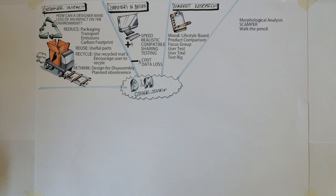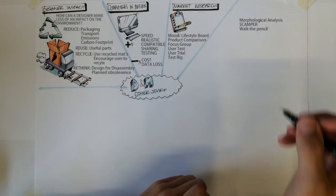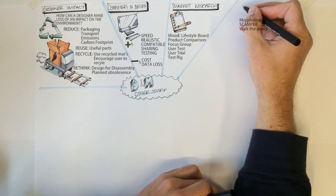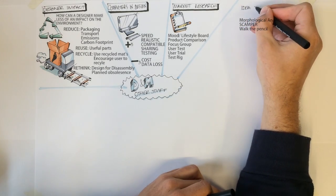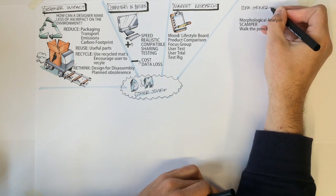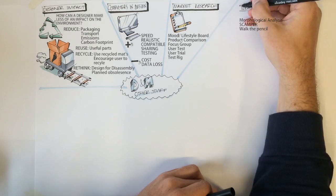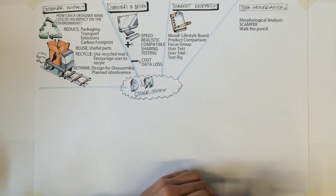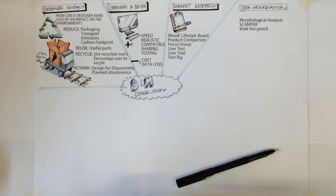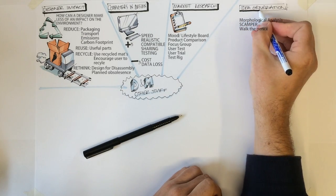Idea generation. A designer always wants to produce unique designs. Idea generation techniques are used to design creative ideas which haven't been seen before. There are many types and we will look at three. One important thing to remember is that sketching is NOT an idea generation technique and won't pick up any marks.